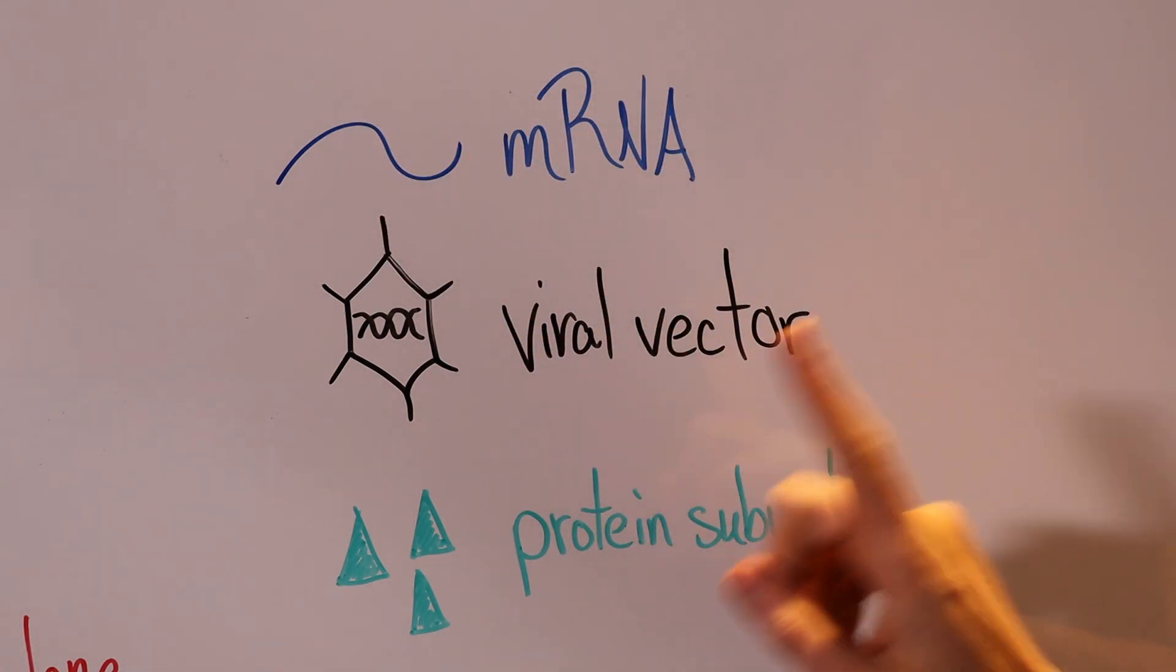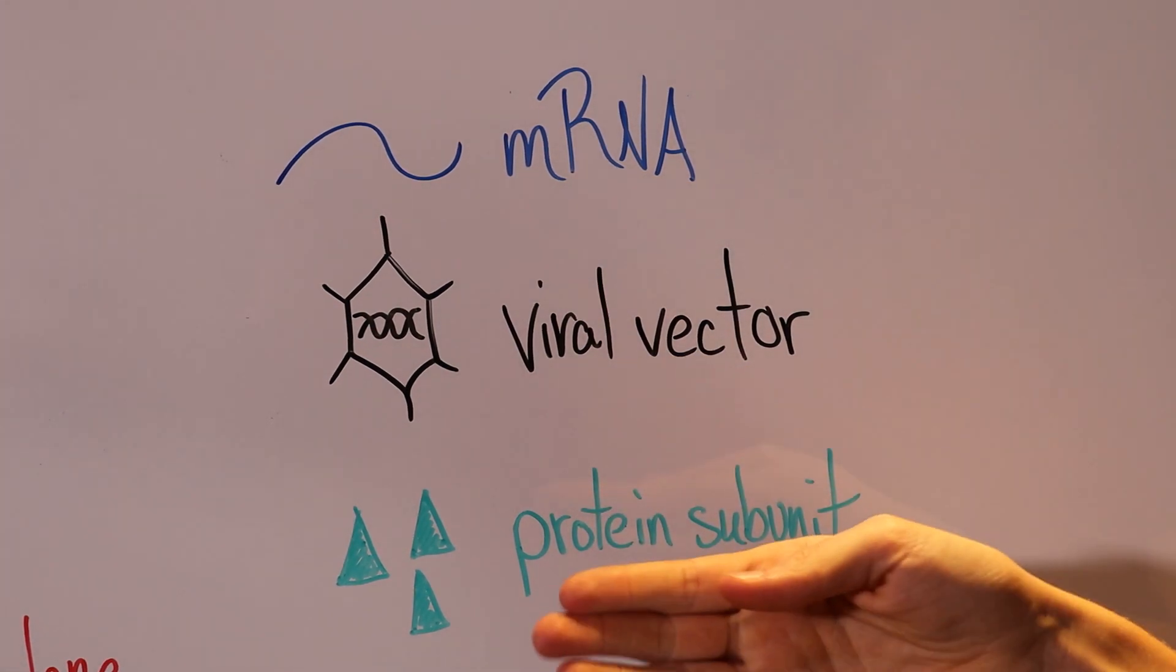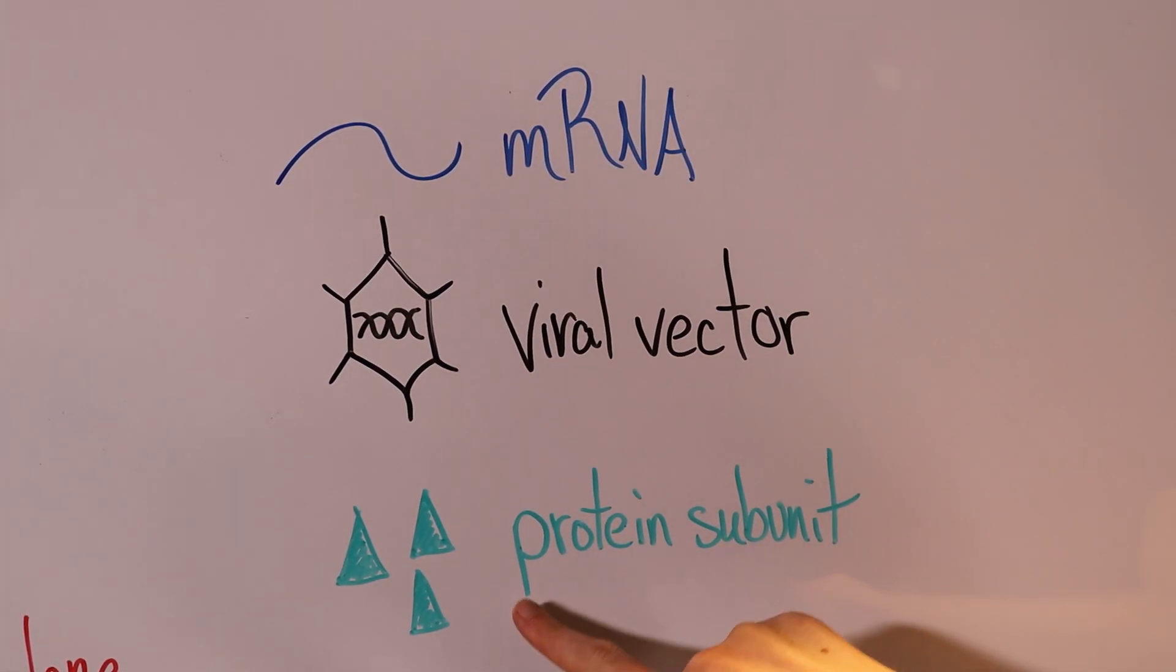So there's no aluminum salts, there's no synthetic DNA, there's no type of emulsions. However if we look at the protein subunit vaccine that does use an adjuvant, a saponin, and you can learn more about that in my Novavax explainer video.